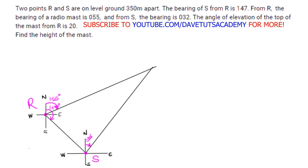You can see how this is forming our triangle. The distance between R and S is 350 meters on the level ground. This particular location of the mast M is also on the level ground. In short, all the bearing work is being done on the ground level, so this colored triangle — with vertices R, S, and M — sits entirely on the ground level.